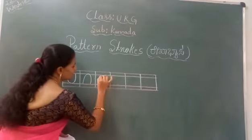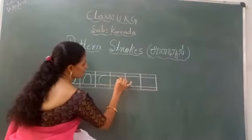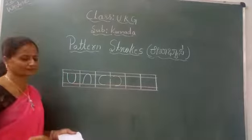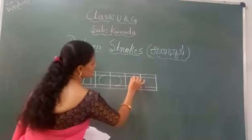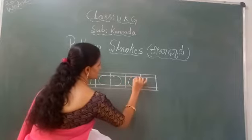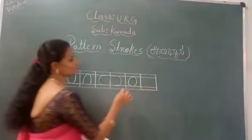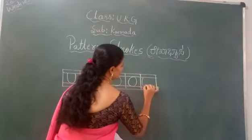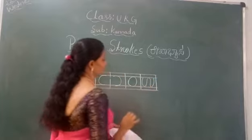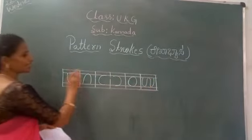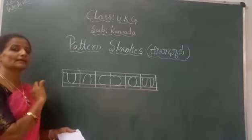Third one — curl. Fourth one — opposite curl. Fifth one — zero, like this. See? Zero like this. This is one type of pattern. And the last one — curl. So these patterns, when we learn them, they will become letters.